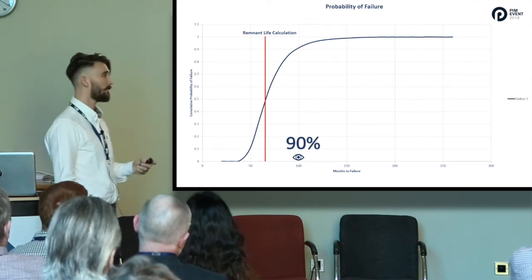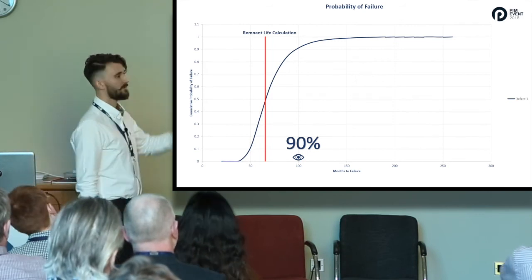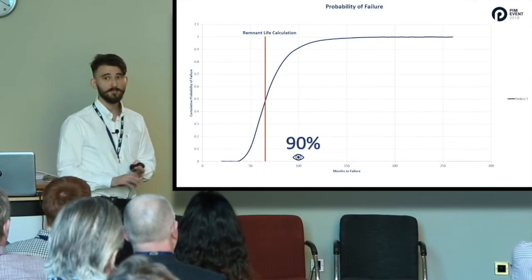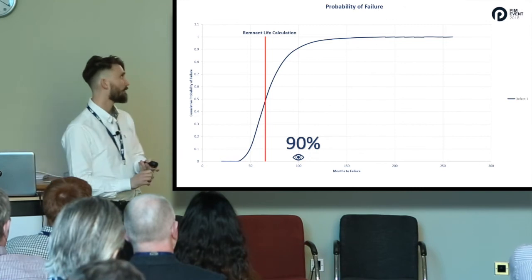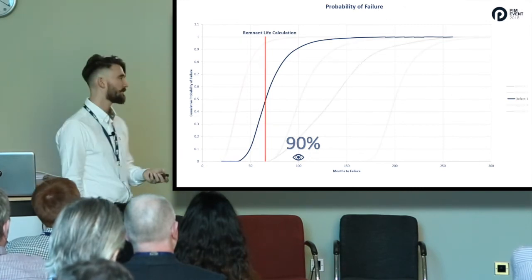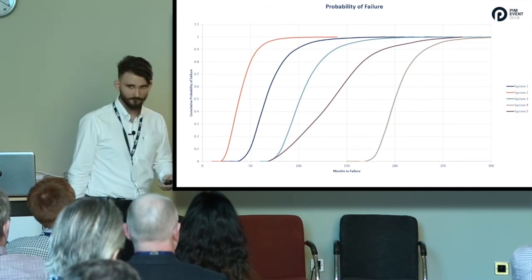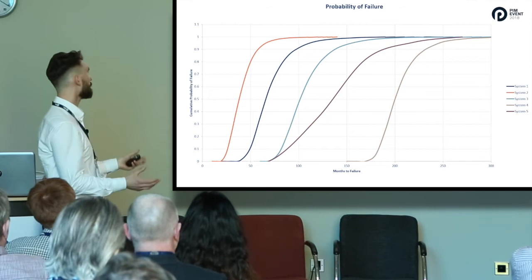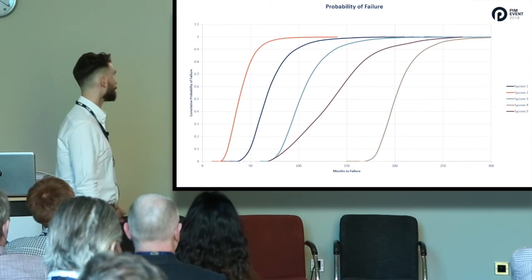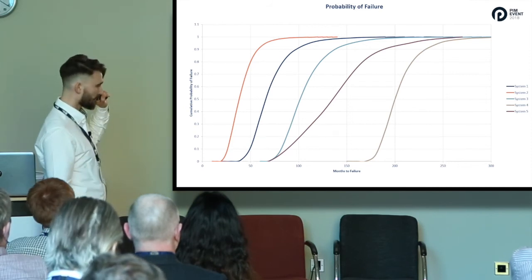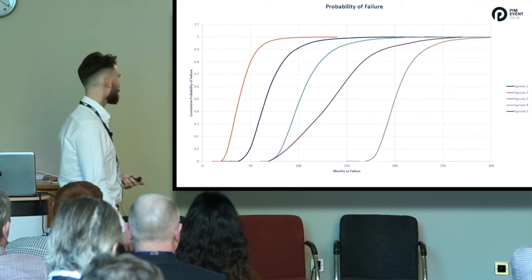Now these S-curves are really useful for comparison. What I can do is plot several of these relating to, let's say, several defects on one item, several sections of pipework, several corrosion circuits, systems. Just as an example, I've taken five systems here. It gives you a really good visual representation of the condition of the items in question, and it makes it really easy to look at what you need to target for inspection or for maintenance.